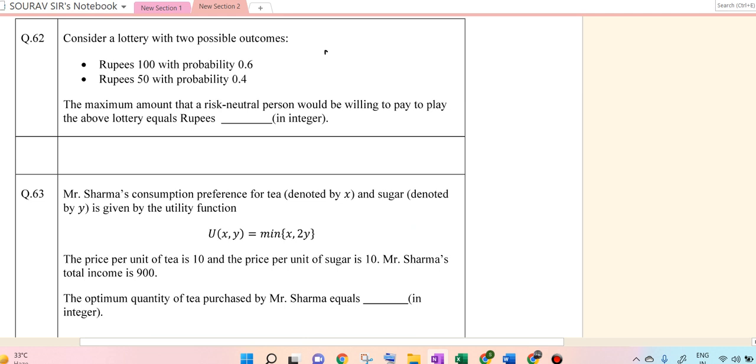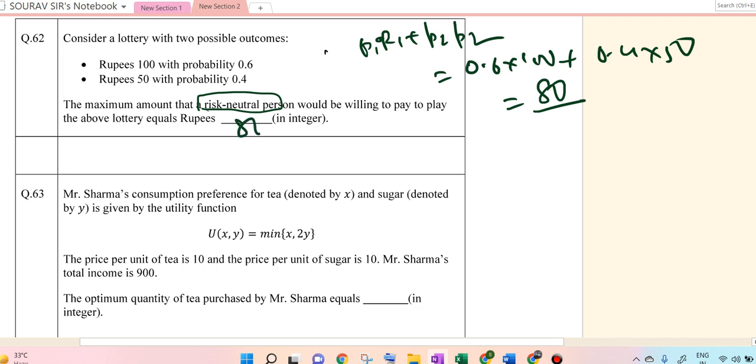Then question 62. They are asking about a risk-neutral person, so risk-neutral only cares about the maximum expected value received. So P1 times R1 plus P2 times R2. So 0.6 times 100 plus 0.4 times 50 equals 60 plus 20 equals 80. So 80 is the answer for 62.